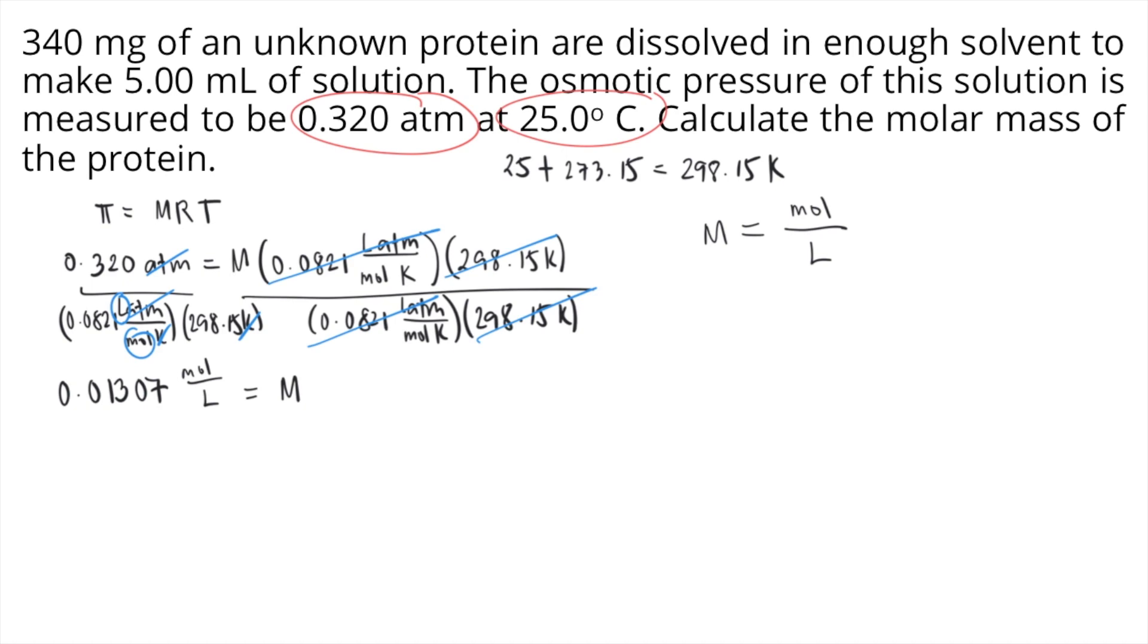We already solved the molarity, that's 0.01307 moles per litre. In the problem, we're not given the moles, so just write moles. In the problem, we're given the volume of the solution, which is 5 ml.